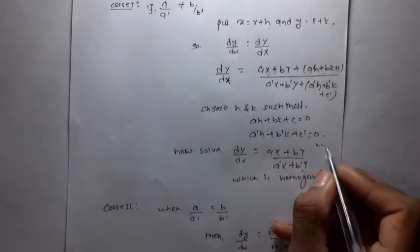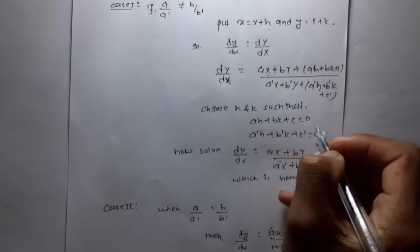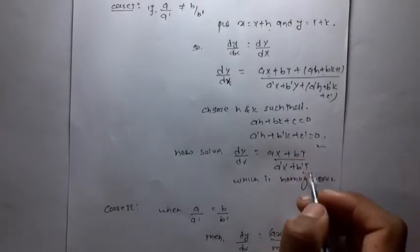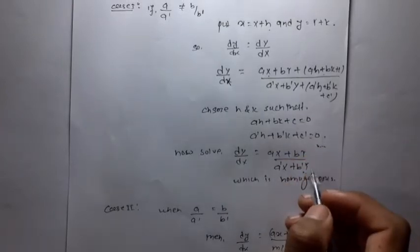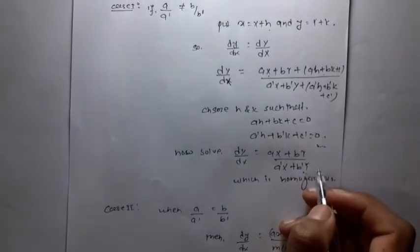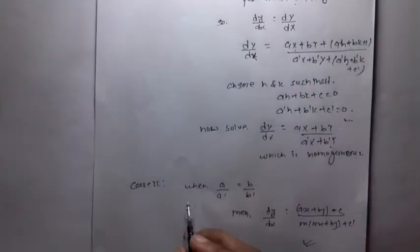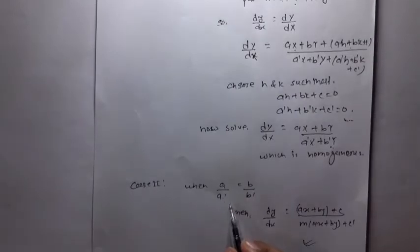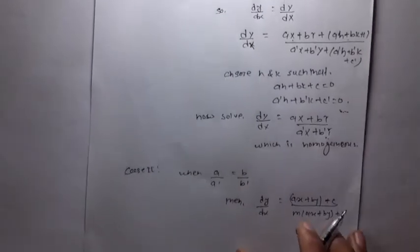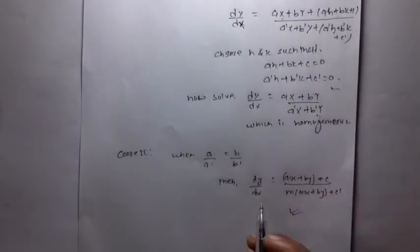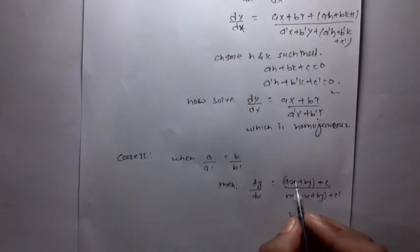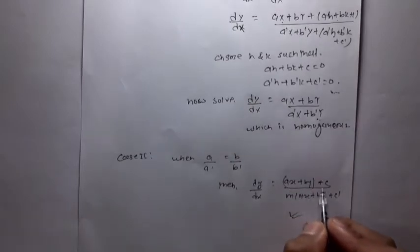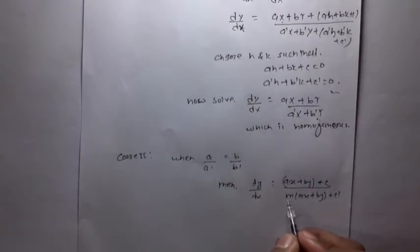For Case 1, after solving for h and k, we get the homogeneous equation and solve it — that gives the required solution. For Case 2, when a/a' is equal to b/b', we simply deal with it by putting v = ax + by as the substitution.